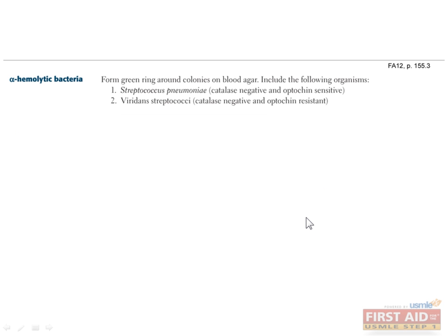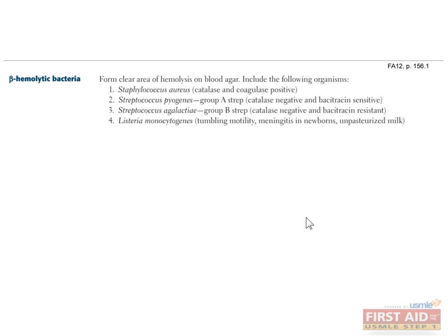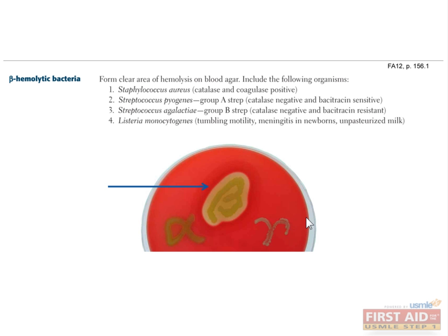As already discussed, bacteria that can produce alpha hemolysis or partial hemolysis when grown in blood agar include strep pneumoniae and viridans streptococci. When trying to differentiate the different streptococci species, those that produce beta hemolysis or complete hemolysis when grown in blood agar are group A strep — strep pyogenes — and group B strep — strep agalactiae.